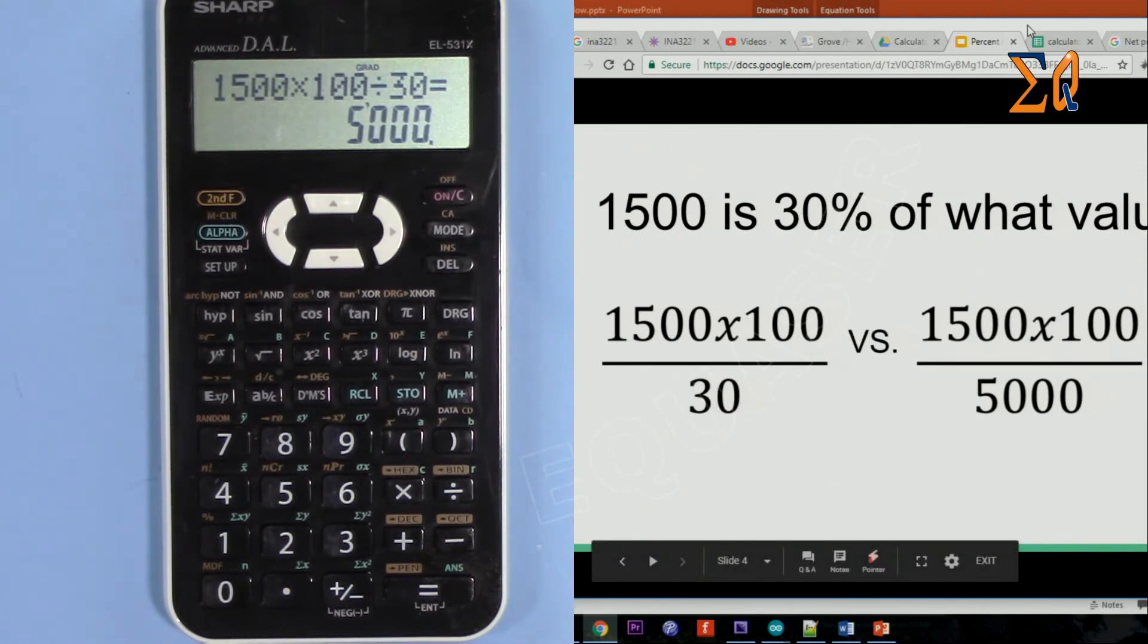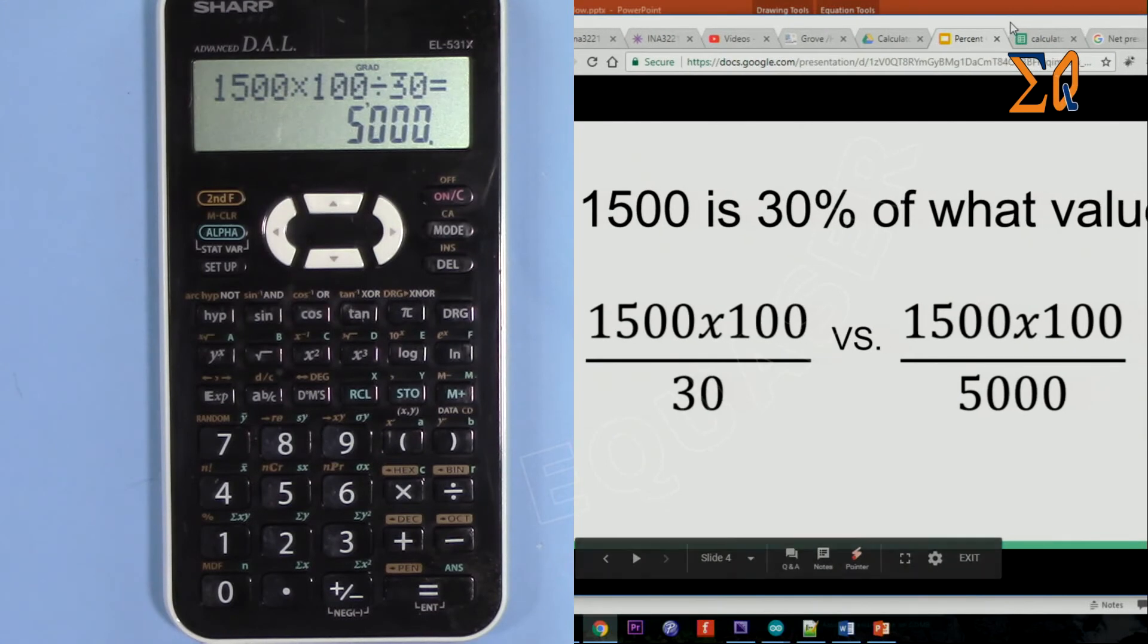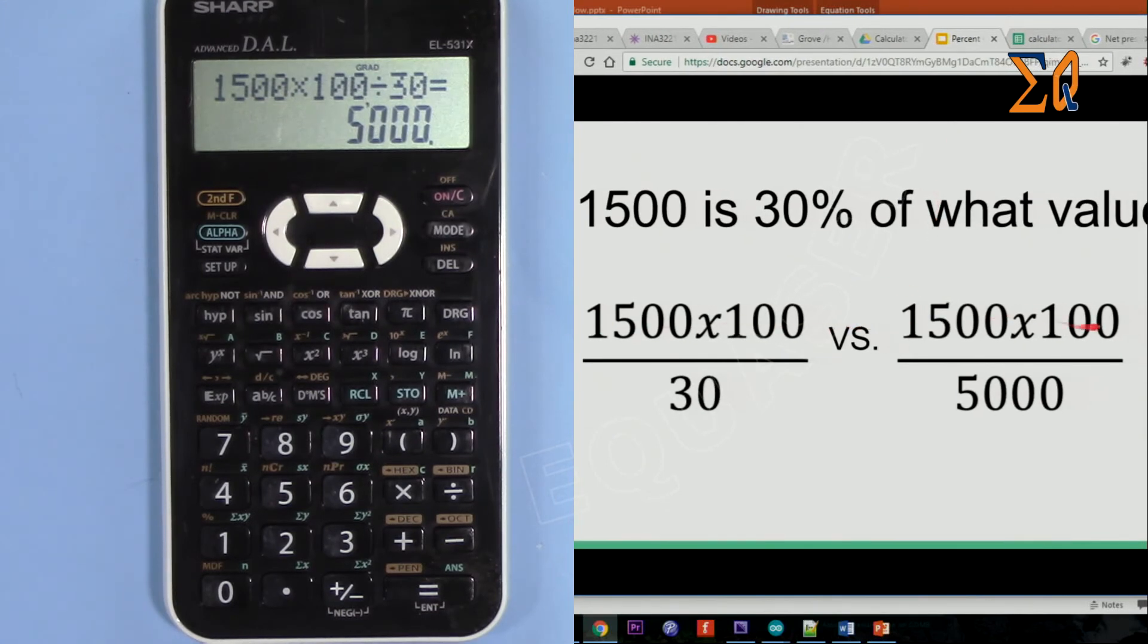But let's compare these two. Very important, pay attention to this: both of them will have 1500 times 100, and then just the denominator or the division changes from 30 to 5000.